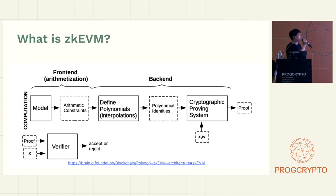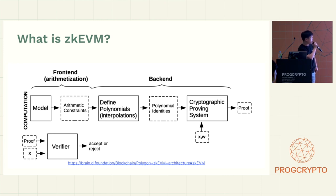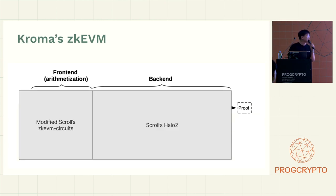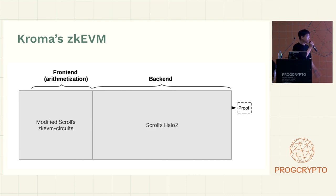What's zkEVM? Let's break down zkEVM from a rollup angle — it has two sides: front-end and back-end. The front-end defines polynomials that adhere to arithmetic constraints. In the back-end, it produces a proof based on these polynomials, established by a cryptographic proving system. In Chroma's zkEVM, we're not reinventing the wheel, so we have customized the Scroll zkEVM circuits for the front-end. The back-end is powered by Halo2.